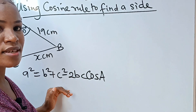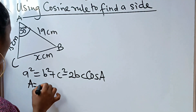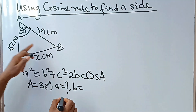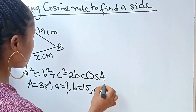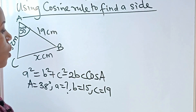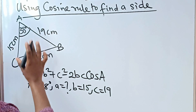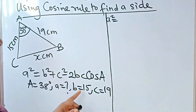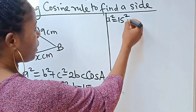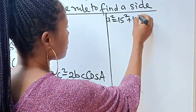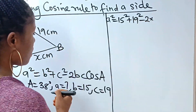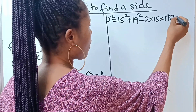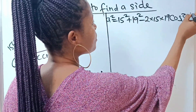Now let's identify our parameters. Capital A is 38 degrees. Small a is what we are looking for. Small b is the side facing capital B, which is 15, and small c is the side facing capital C, which is 19. Substituting into the formula: a² = 15² + 19² − 2 × 15 × 19 × cos(38°).